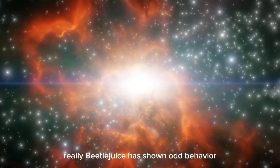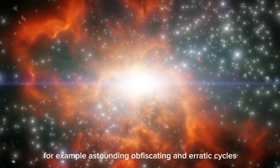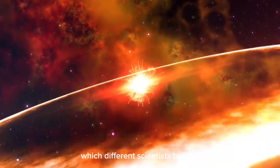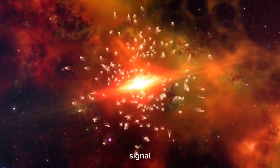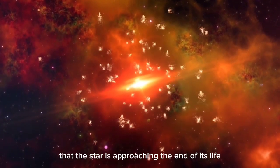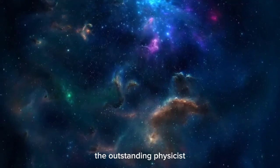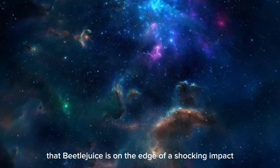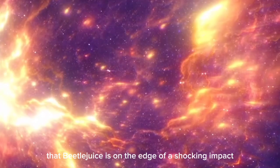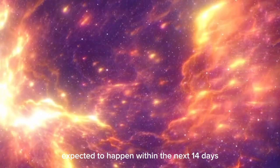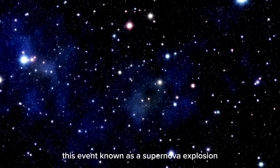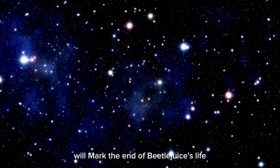Betelgeuse has shown odd behavior, for example, astounding dimming and erratic cycles, which different scientists believe signal that the star is approaching the end of its life. The physicist Brian Cox recently offered a fundamental explanation that Betelgeuse is on the edge of a shocking impact expected to happen within the next 14 days. This event, known as a supernova explosion, will mark the end of Betelgeuse's life.